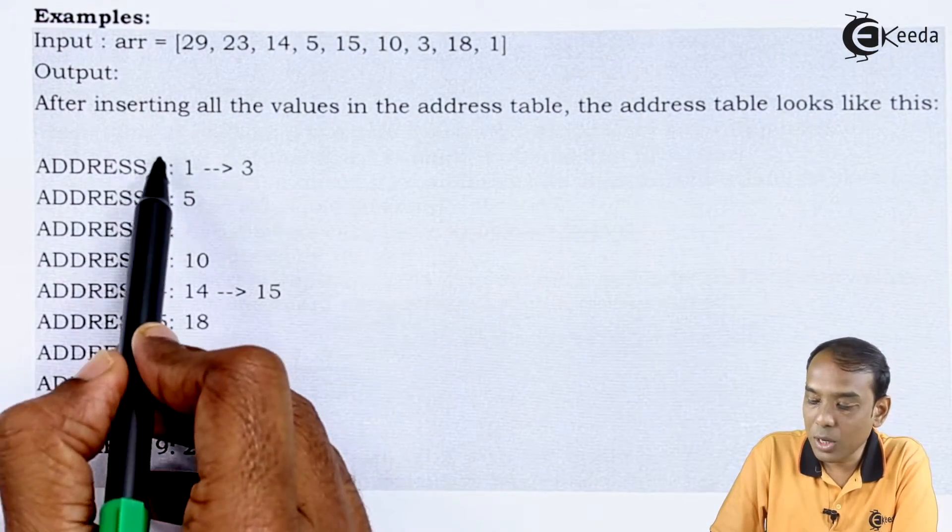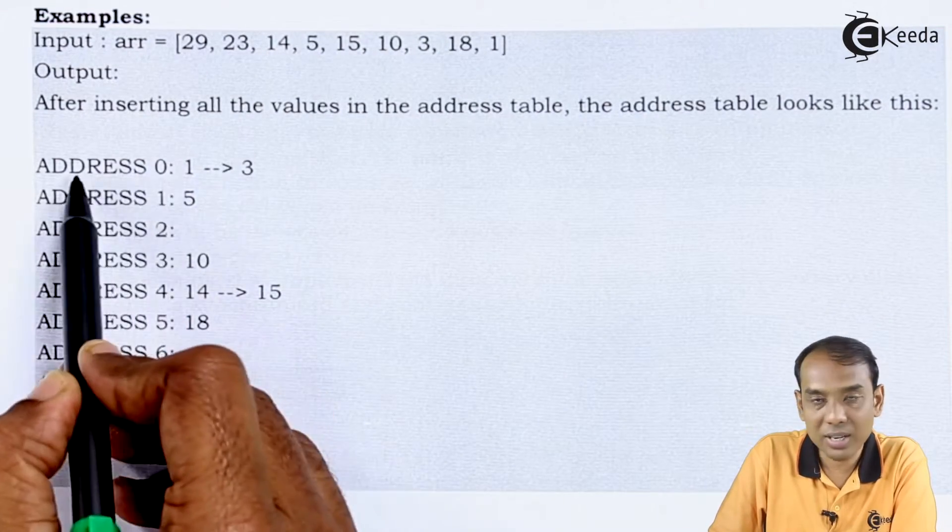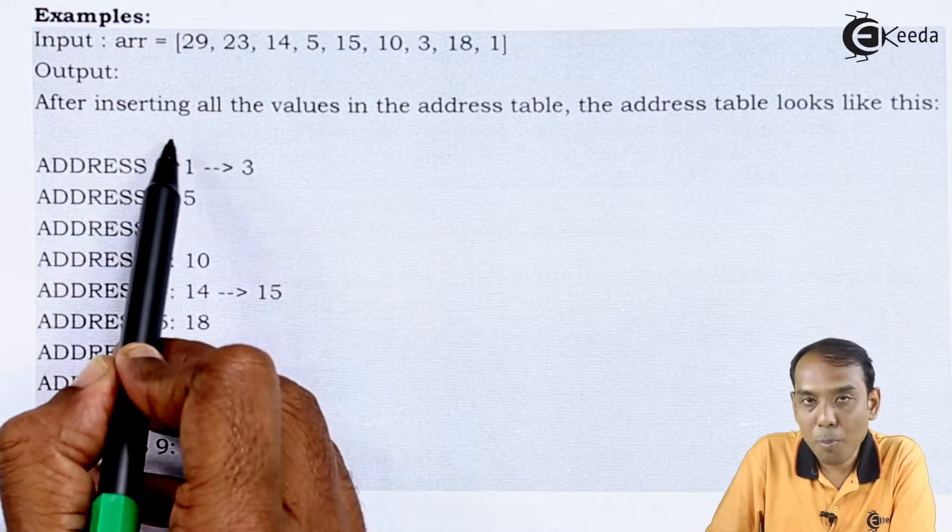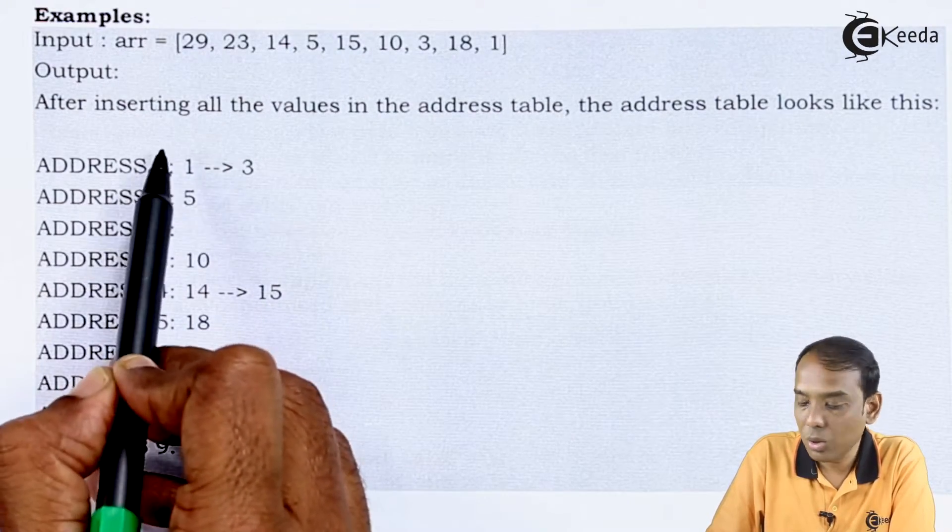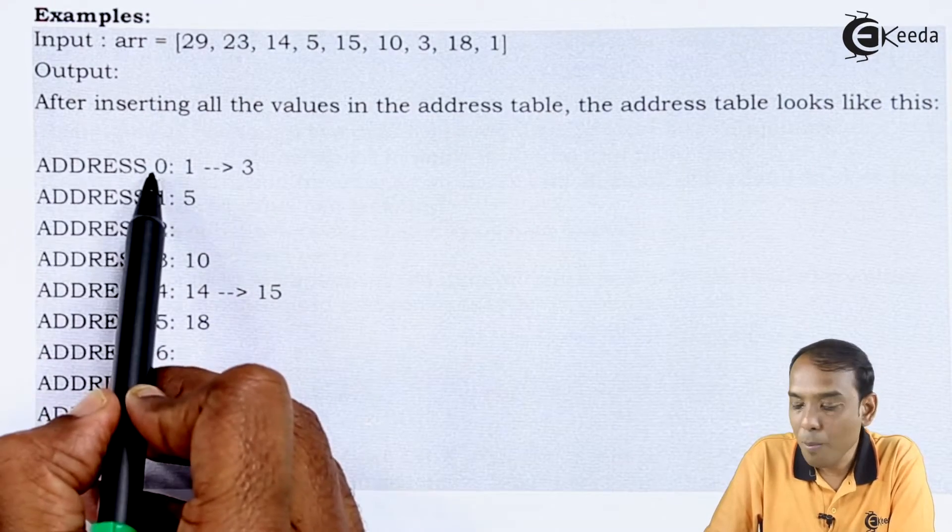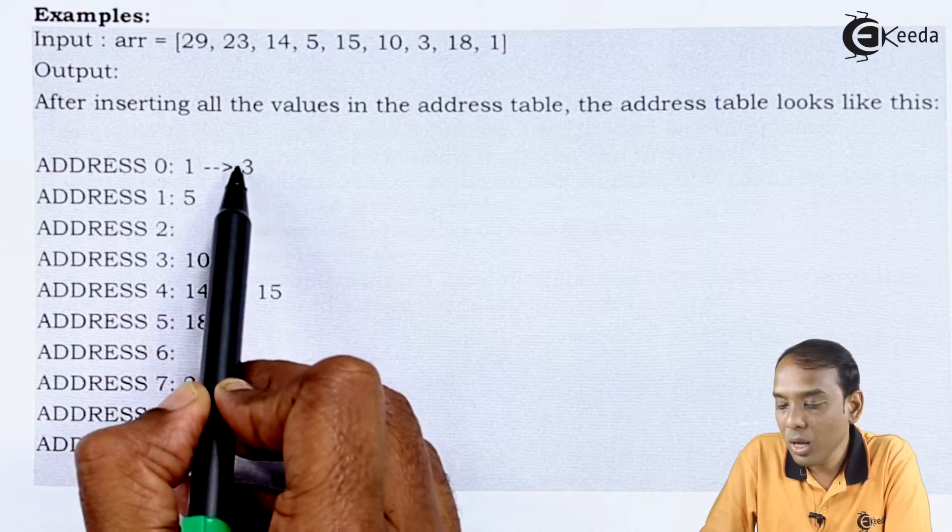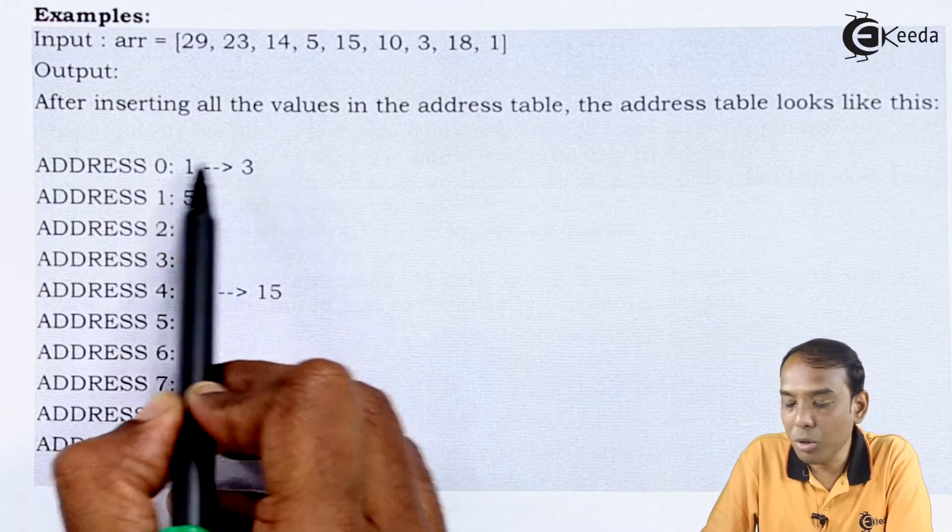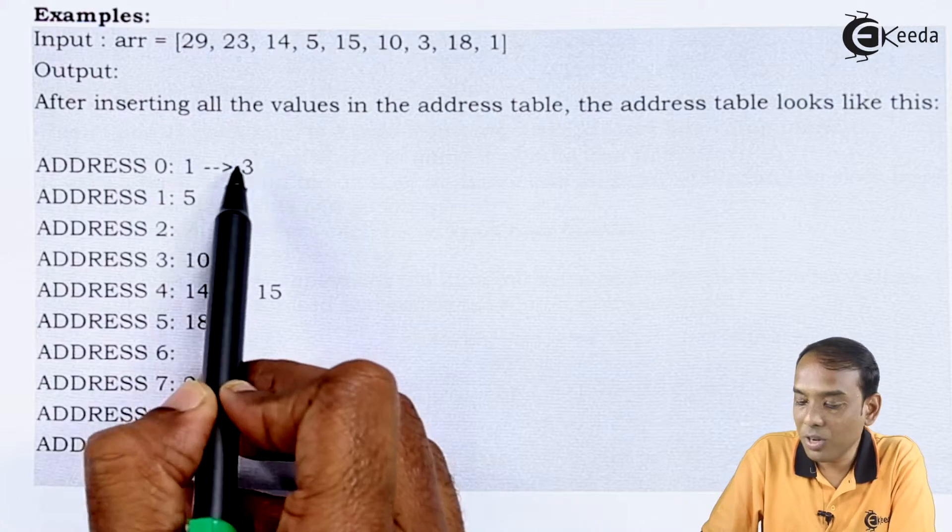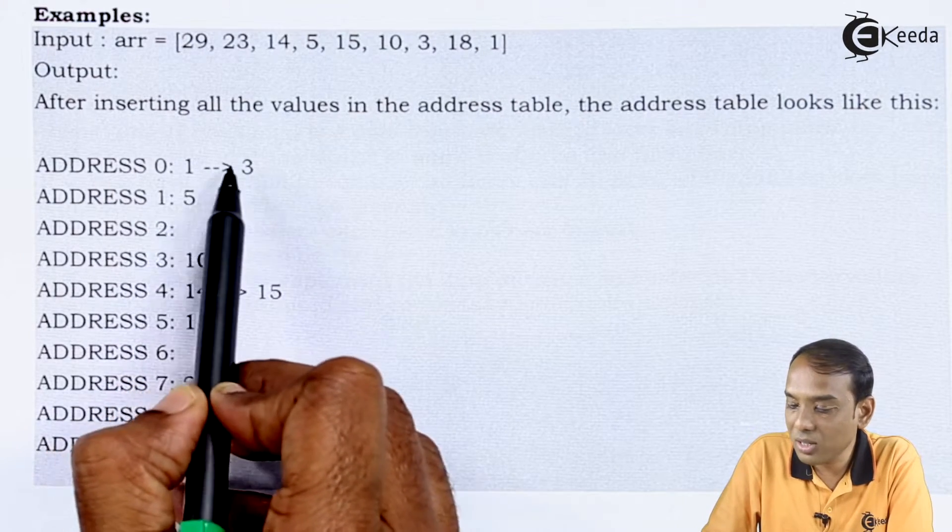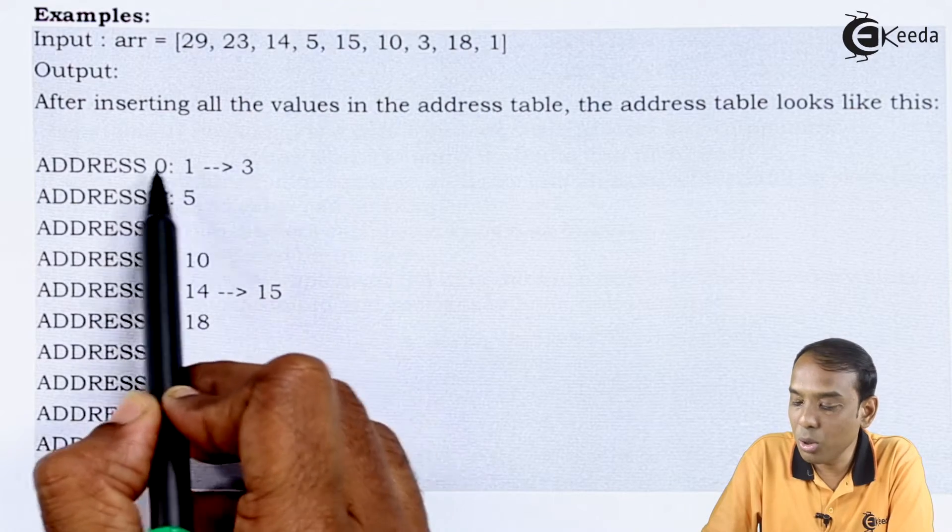In address number 0, since we are dealing with the array we have the addresses starting from 0. We have address 0 which will be pointing. It consists of a linked list. So we have address 0 pointing to first address, that is the first number, and it will point to the third number. Like this they are going to be stored. So if I want to access third, first I need to access the 0 address, then I can access the first value, then I can access the third value. This is how you are going to store the value.